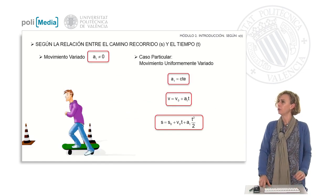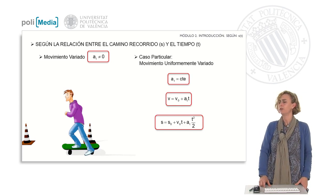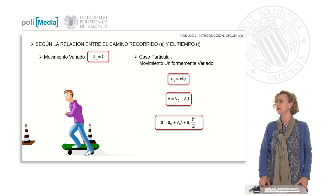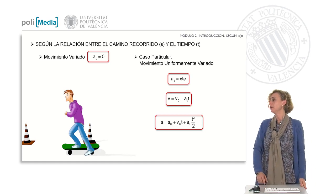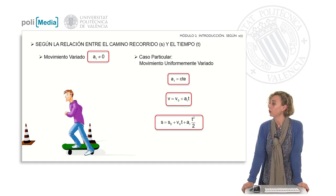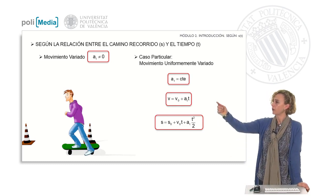In all varied motion the tangential acceleration is different from zero. As a specific case we have examined uniformly varied motion in which the acceleration is constant. The velocity depends on time and the distance traveled does as well. The relationship between velocity and time is seen in the second equation, and the relationship between the distance traveled and time is seen in the equation below.